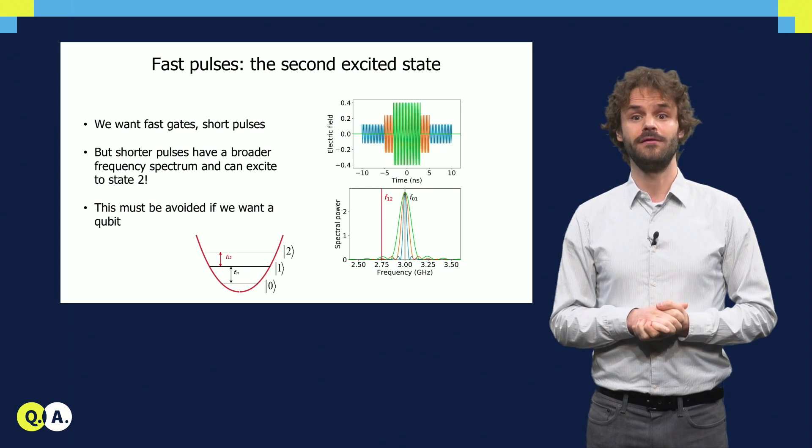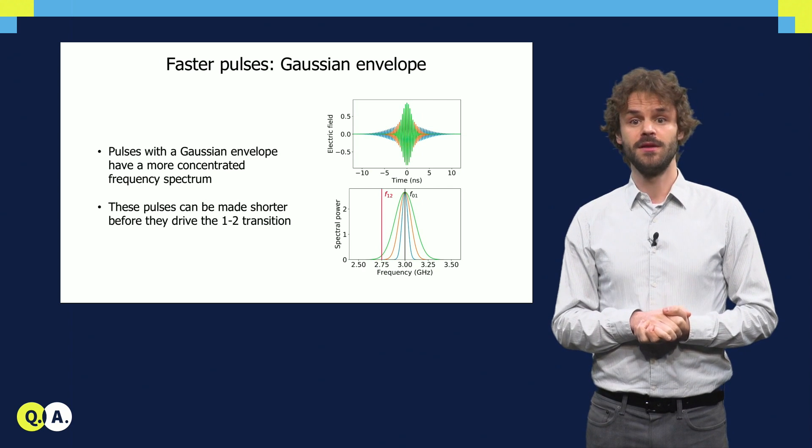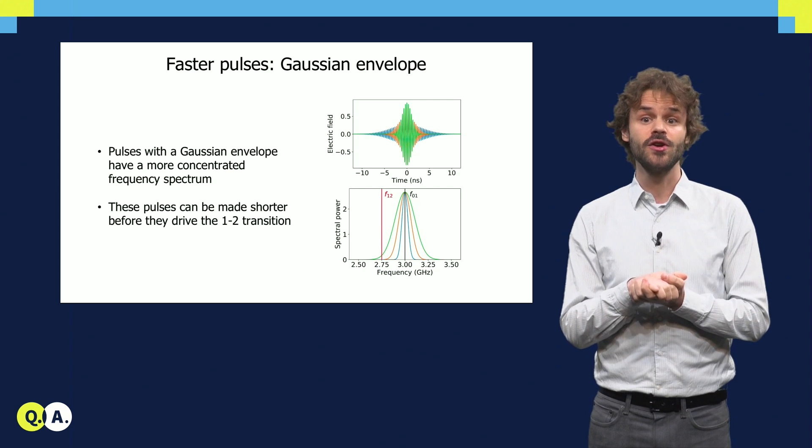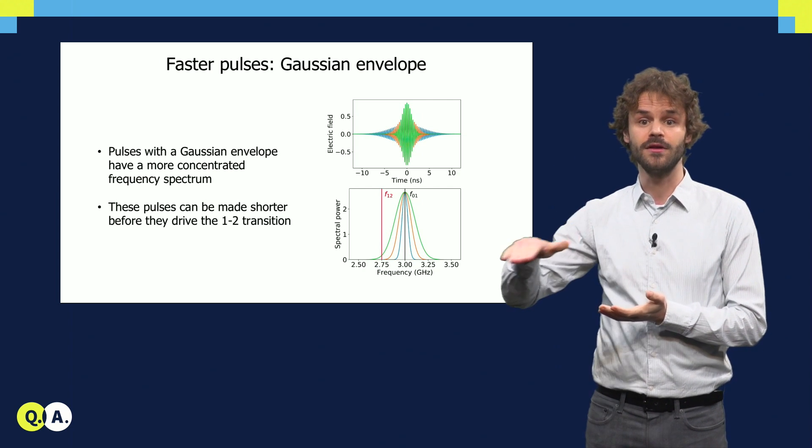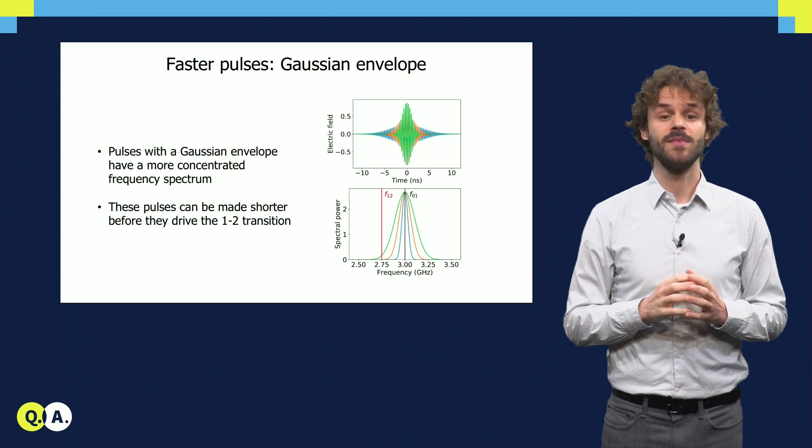To push the limit of how short we can make the pulse, instead of a square pulse, we need a pulse which is well localized in time and also frequency. A much better choice is a pulse with a Gaussian-shaped envelope. It has the same area, but affects the 1-2 transition much, much less.